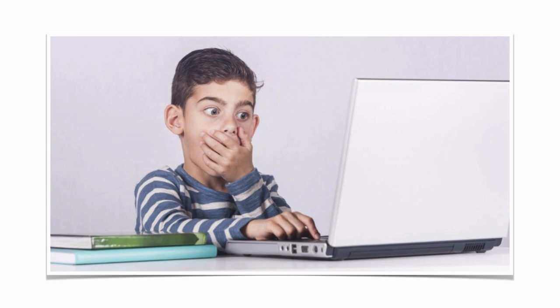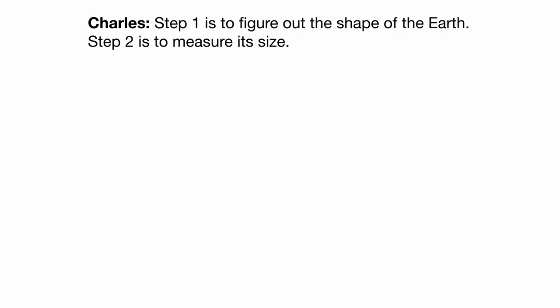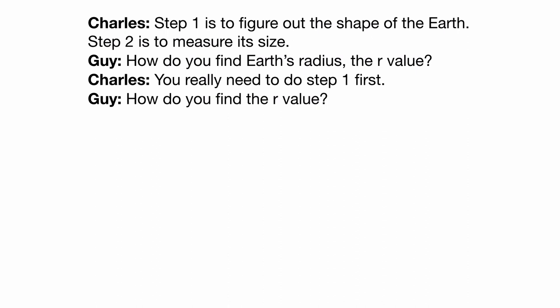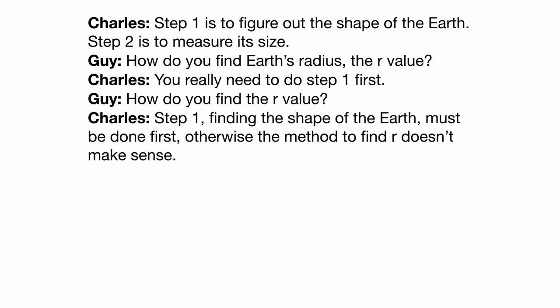Which gets us to the purpose of this video. I was talking to this guy on the internet, and I was trying to explain how to find the size of the Earth. Step one is to figure out the shape of the Earth. Step two is to measure its size. But how do you find the Earth's radius — the R value? Well, you really need to do step one first. How do you find the R value? Step one — finding the shape of the Earth — must be done first. Otherwise, the method to find R doesn't make sense.